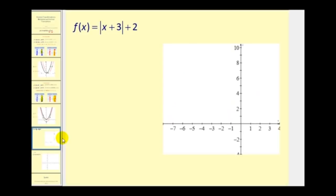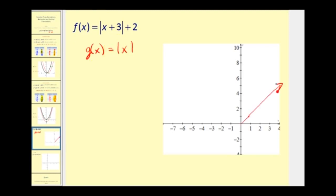Let's look at some examples. We want to graph f of x equals the absolute value of the quantity x plus 3, plus 2. The first step is to recognize the parent function — in this case, the absolute value of x. Let's call it g of x equals the absolute value of x. The absolute value function forms a V-shape, with key points at (2, 2), (0, 0), and (−2, 2).